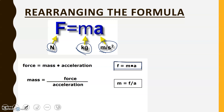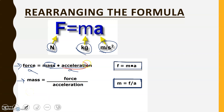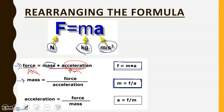If you want to solve for mass, you need mass on a side by itself, so you divide by acceleration on both sides. That gives you mass equals force divided by acceleration. If you want to solve for acceleration, you divide by mass on both sides, giving you acceleration equals force divided by mass.